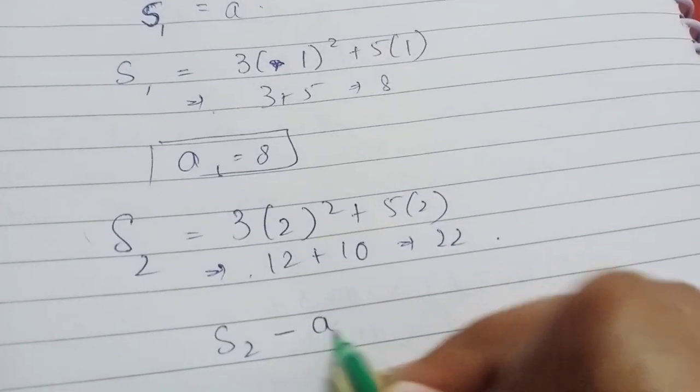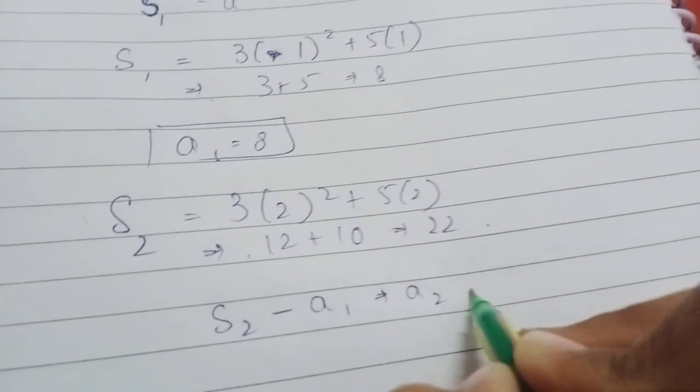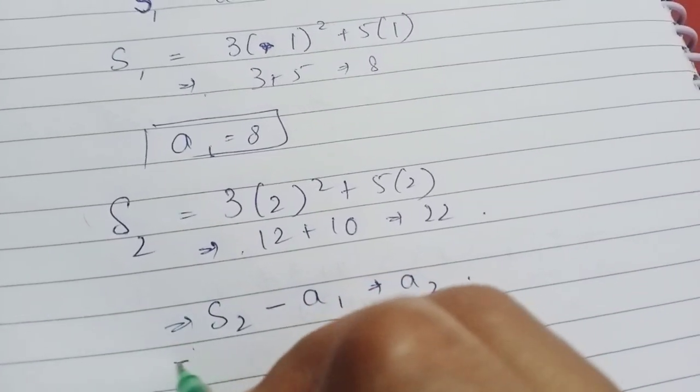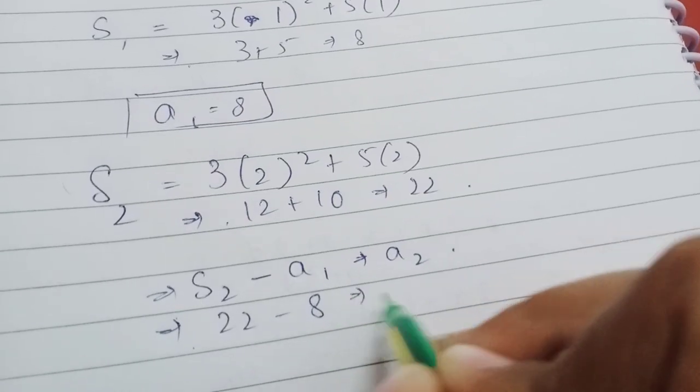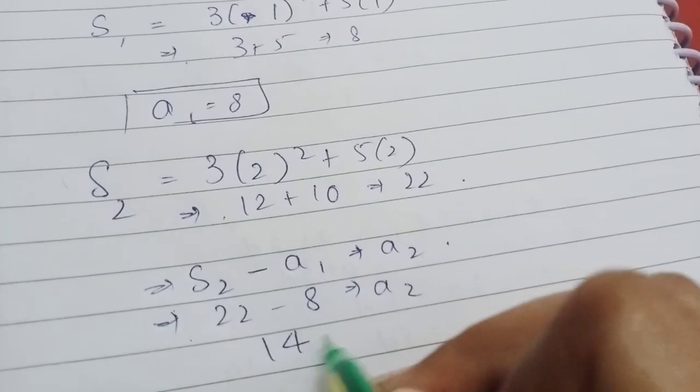S₂ minus a₁ will be equal to a₂. Then, this will be 22 minus 8 is equal to a₂, 14 is equal to a₂.